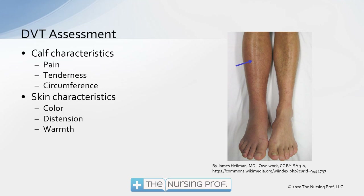Since the clots are coming from the lower extremities, when assessing for deep vein thrombosis or thromboembolism, we want to look at and assess that area. Looking at the two calves, you can see that one calf is considerably larger than the other — because of the clot, we're having a backup of venous flow causing swelling. So pain, tenderness, and circumference measurement can help identify pooling blood as a result of a clot.